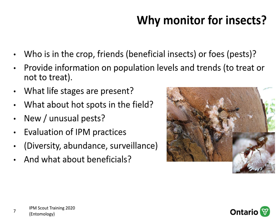Scouting can tell you what life stages are present, which is really important because only certain life stages may be exposed or susceptible to the controls used against them. It also tells you about potential hotspots in the field — some pests are border pests, and if growers know they're just in those regions they can treat those hotspots exclusively and save money. It can also identify new or unusual pests. As a follow-up, scouting gives you an idea of how well the grower's IPM practices are working, and it's a great surveillance tool.